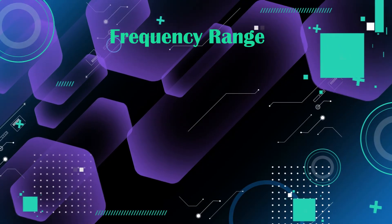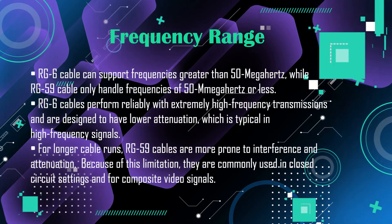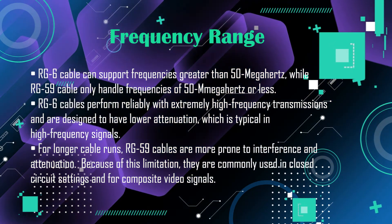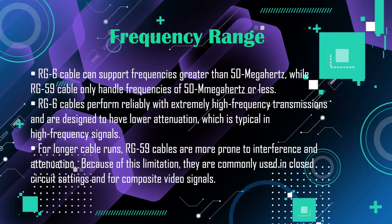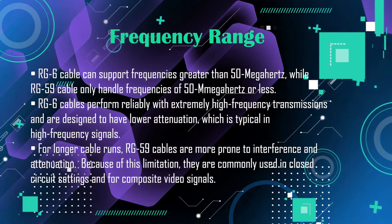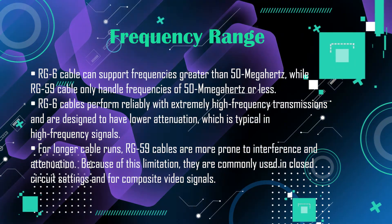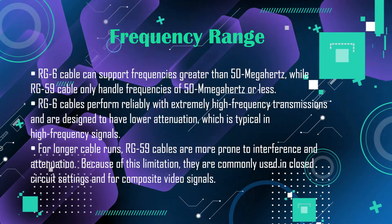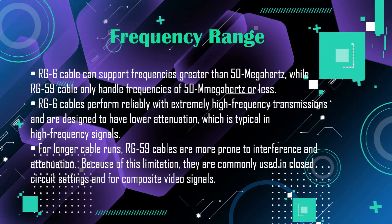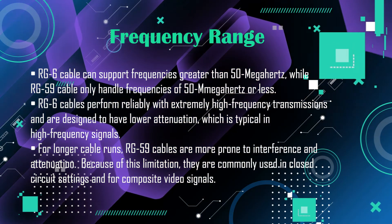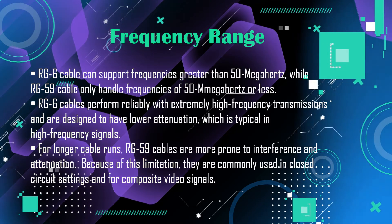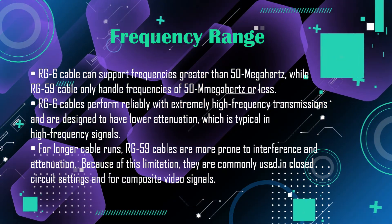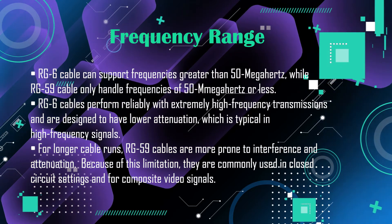Frequency range: RG6 cable can support frequencies greater than 50 megahertz, while RG59 cable only handles frequencies of 50 megahertz or less. RG6 cables perform reliably with extremely high frequency transmissions and are designed to have lower attenuation, which is typical in high frequency signals for longer cable runs.